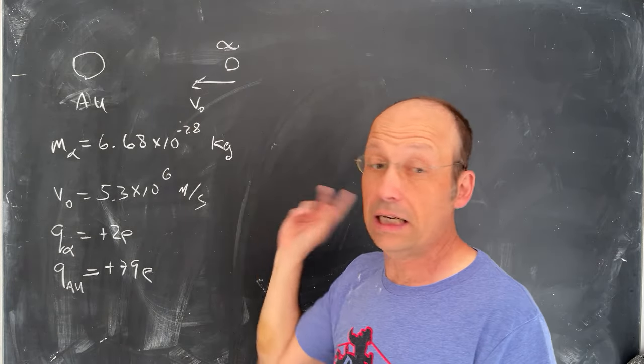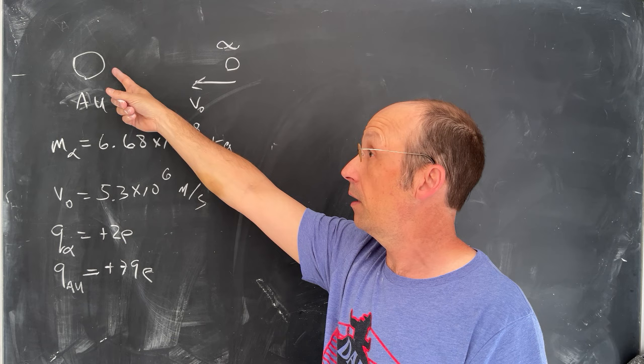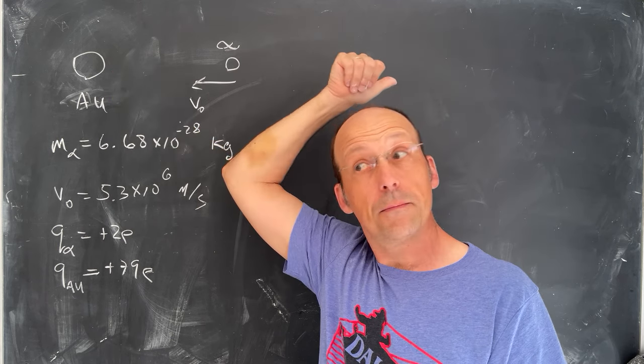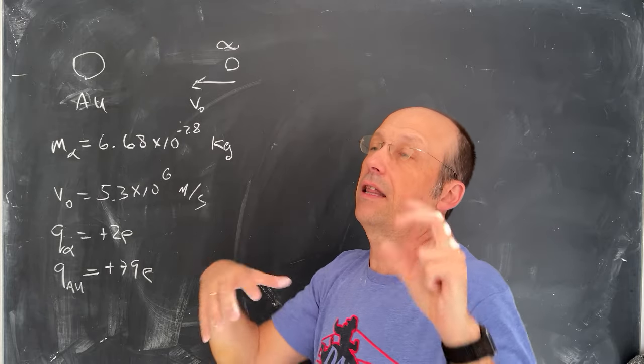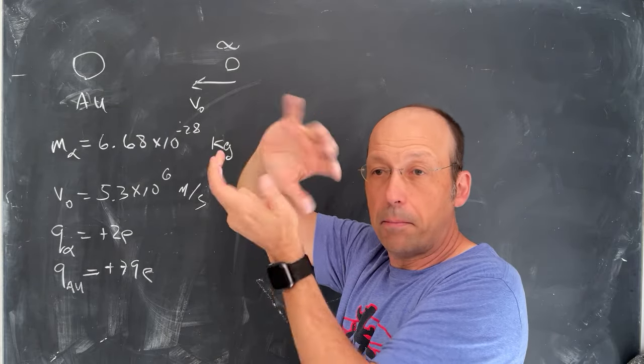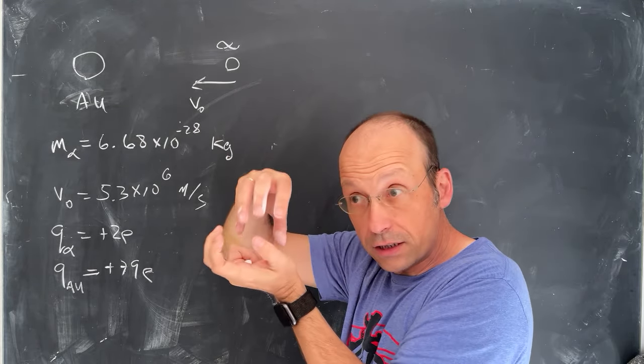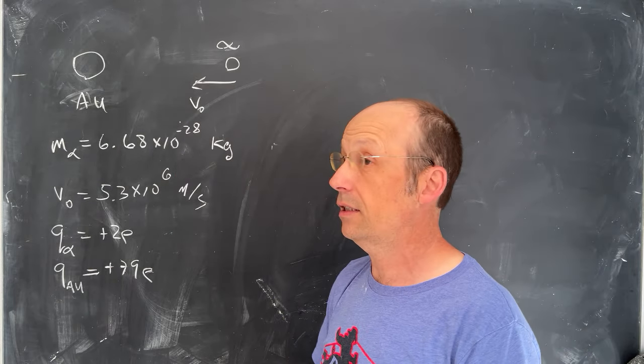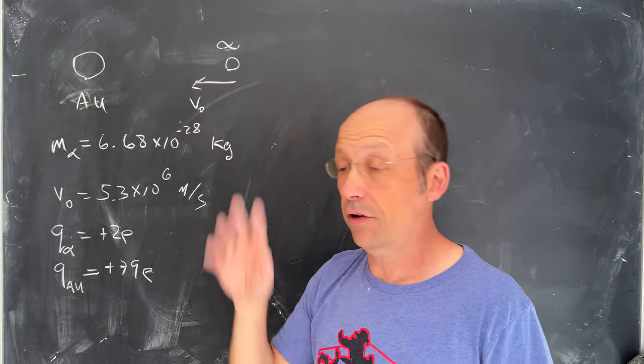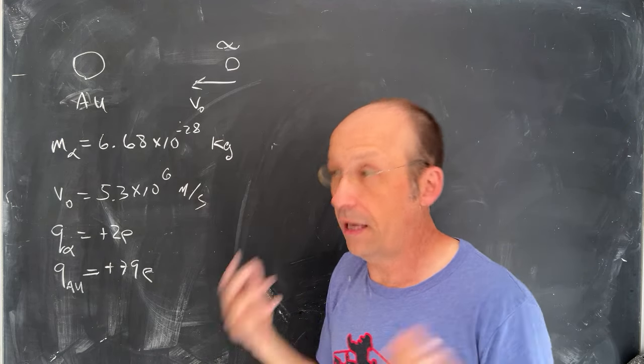But what they found was that in some cases the alpha particle would get repelled back because it's interacting with the nucleus. And so that led to the idea that the positive charges were in the nucleus of the atom and then the electrons, the very low mass electrons, were outside of that. And they knew the mass of electrons from a different experiment. There you go. That's why it's important.